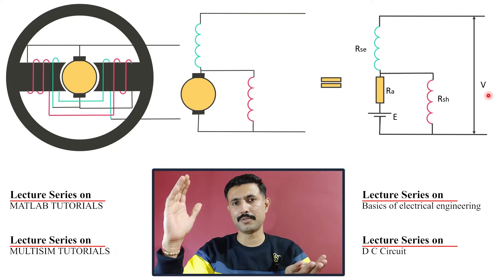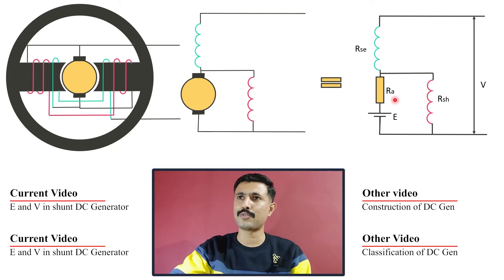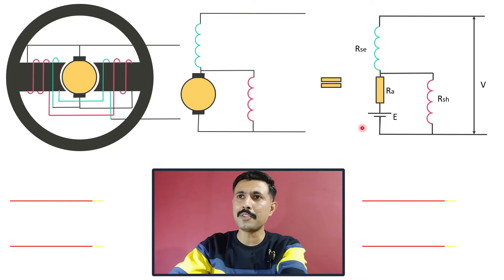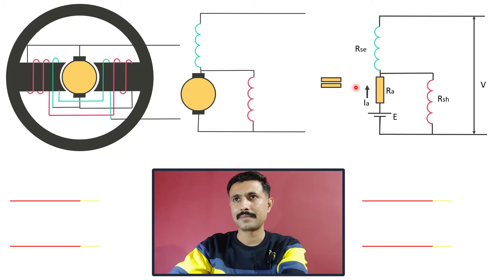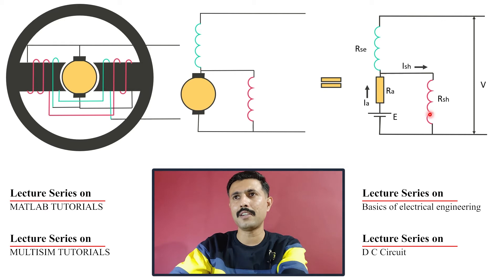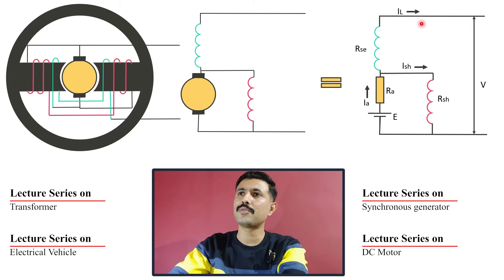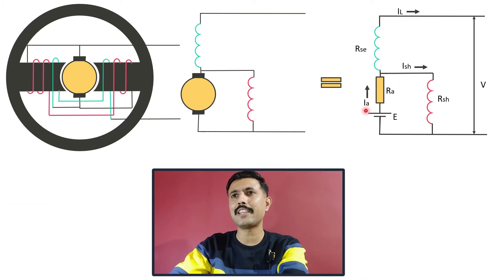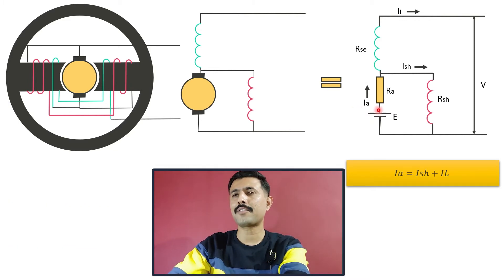To establish the relation, we apply KVL in the closed loop, but first we need the current flowing through the circuit. When induced EMF E is generated in the armature, it drives the armature current. At the junction point, this armature current divides — one part flows through the shunt field winding as the shunt field current ISH, and the other flows through the series field winding to the load as load current IL. From this, we can write the equation: Ia = IL + ISH.